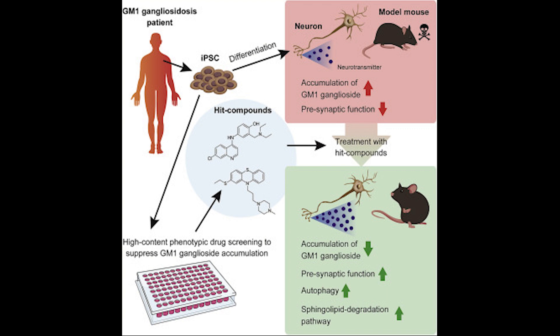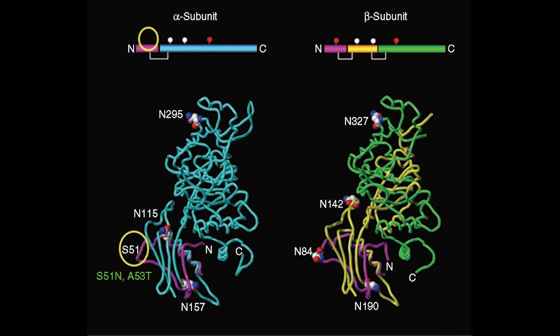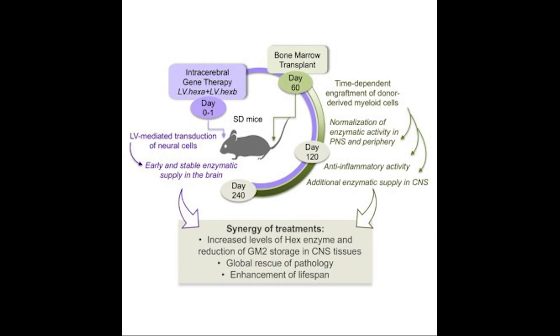The progressive neurodegeneration seen in the varied forms of Tay-Sachs depends upon the speed and degree of GM2 ganglioside accumulation, which in turn is dependent upon the level of functional beta-hexosaminidase A present in the body. A mouse model has been developed for Tay-Sachs, although its usefulness is limited since Tay-Sachs mice possess a minor alternative pathway for breaking down GM2 ganglioside.